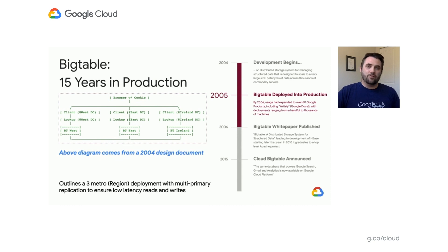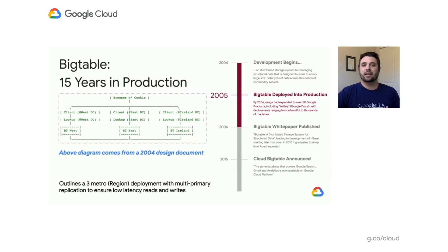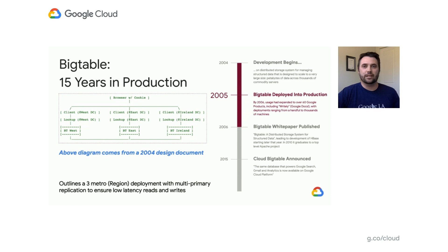To kick that off, I'm going to give you a little bit of trivia you might not have heard before. Because this year, 2020, marks 15 years of Cloud Bigtable being in production here at Google. We've spent a lot of that time optimizing Bigtable from the experience of running everything from small zonal workloads to our largest and most demanding workloads with deployments spanning the globe. Here is a diagram from a design doc from one of those very first deployments of Cloud Bigtable, showing a replicated system across three regions.